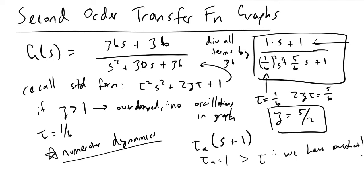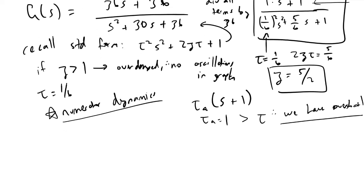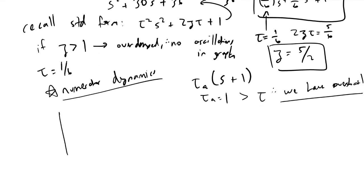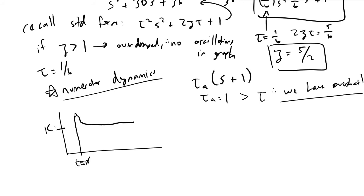Taking all these pieces of information together, if we plot our second order transfer function with a step change at t equals zero, we would find there is some initial overshoot, and then it tapers off to the new gain value. We would not see any oscillations, because our damping coefficient zeta was greater than one.